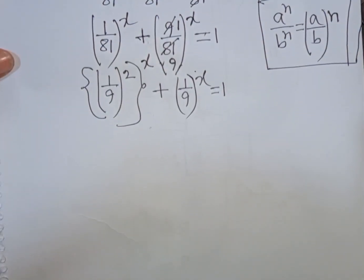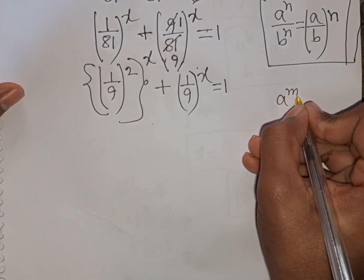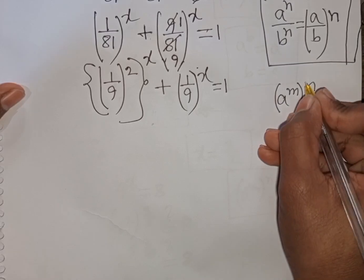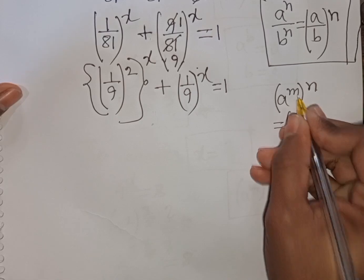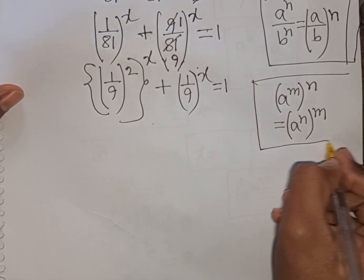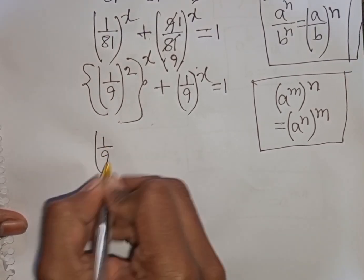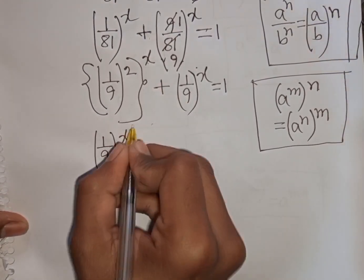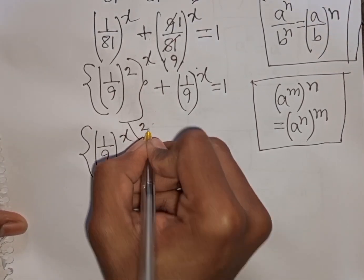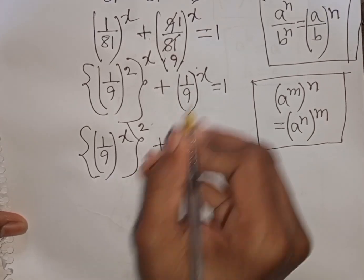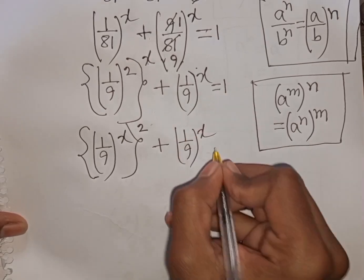Now we can apply the exponential rule: (a^m)^n = (a^n)^m. So according to this rule we can write [(1/9)^x]^x = 1, giving us (1/9)^x times (1/9)^x = 1.